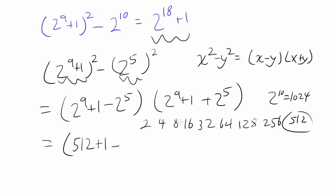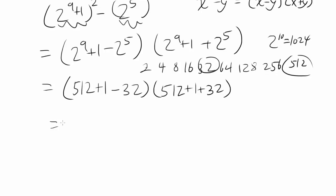And 2 to the 5th is 32 times 512 plus 1 plus 32. And let's try to simplify this.